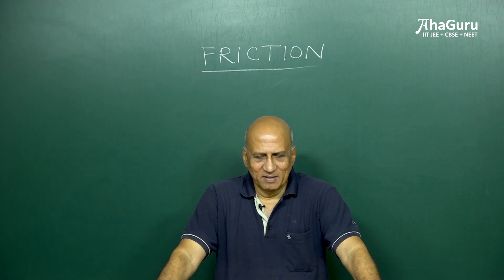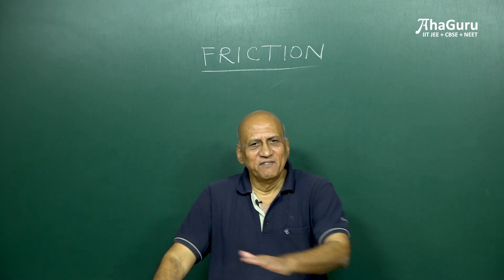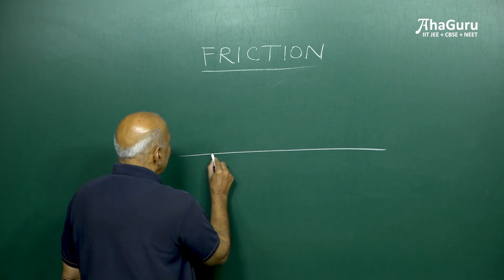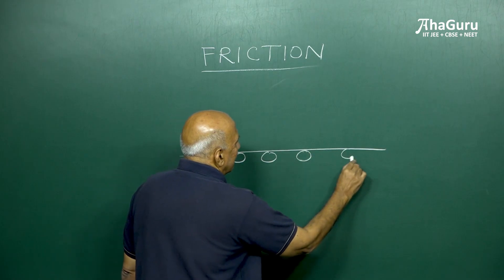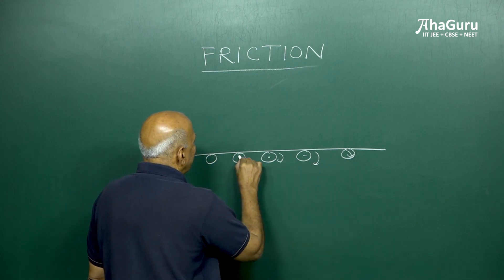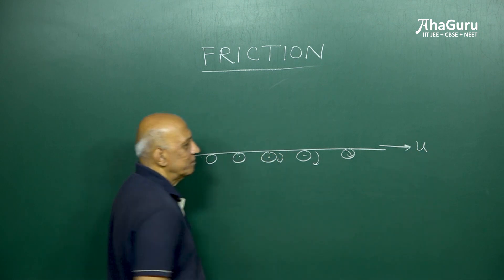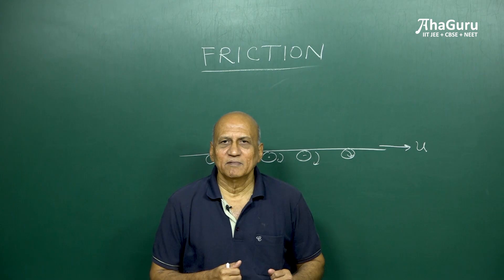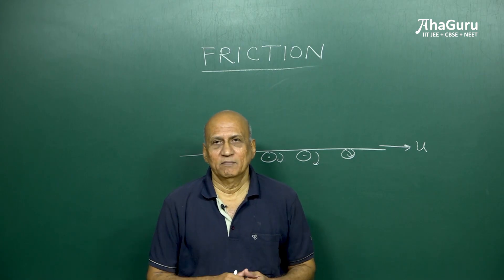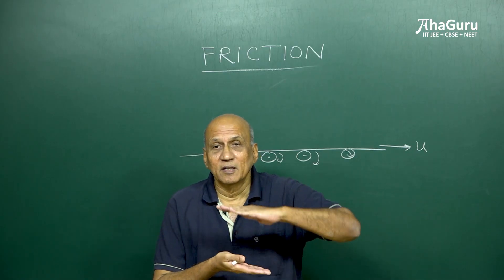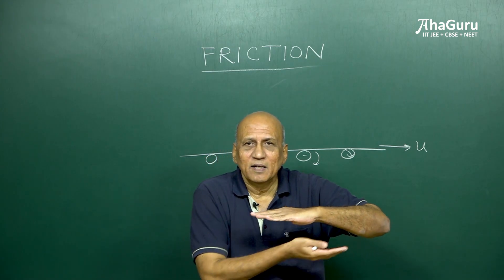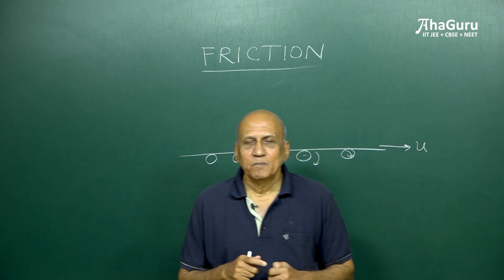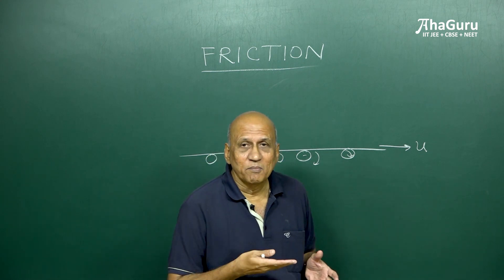Let me give you a second example of friction. All of you have probably gone to an airport and seen a conveyor belt carrying your luggage. Now let's say this conveyor belt is moving along at a speed u. You come in and place your suitcase on top of the conveyor belt and it starts moving with the conveyor belt. Why does that happen? Friction. Because if there was no friction between the conveyor belt and the bottom of the suitcase, the conveyor belt would just slide and the suitcase would just remain there. There'd be no horizontal force to push it along. So this is another example where friction is not opposing the motion — it is in fact causing the motion.